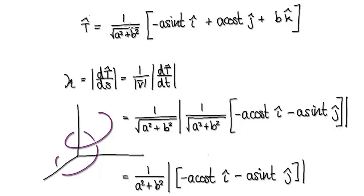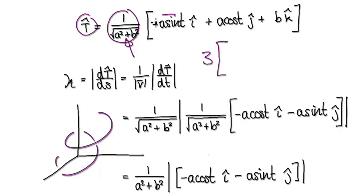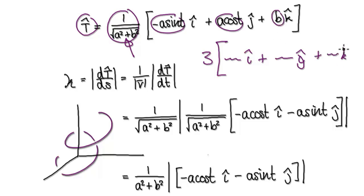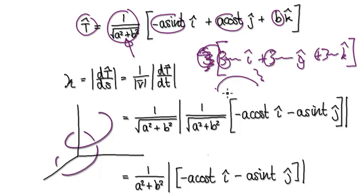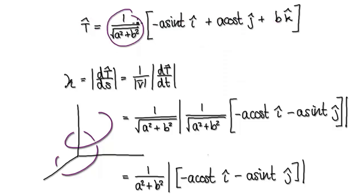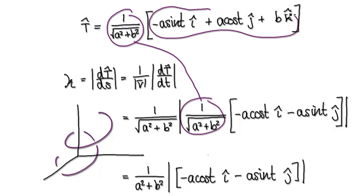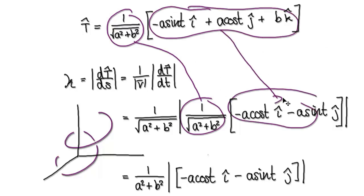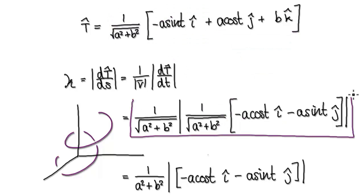If you're uncomfortable about differentiating the unit tangent with a constant in front, you can imagine it like this: the constant, say 3, can be pushed into each component so it looks like 3 times each term. When you differentiate, the 3 remains the same and you can factor it back out. So you can just leave the constant outside and concentrate on differentiating what's inside — it's the same thing. So curvature is given by this expression. I will continue in the next video.